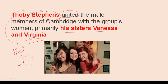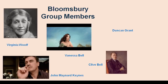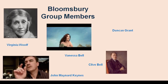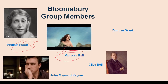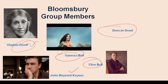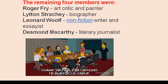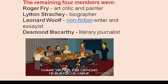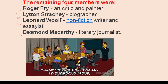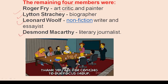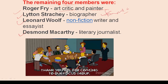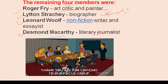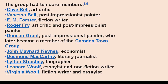Now let's look at the group members. First was Virginia Woolf, who is known for the stream of consciousness technique in English literature. Then Vanessa Bell and Duncan Grant. Next is Clive Bell and John Maynard Keynes, who was an economist. The remaining four members were Roger Fry, Lytton Strachey, Leonard Woolf, and Desmond McCarthy.